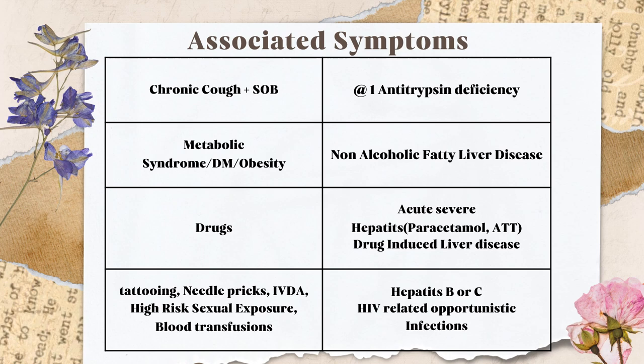There are specific questions about environmental, occupational, and sexual exposure that you must ask, because hepatitis B, C, and HIV are relatively very common in our setting. Ask specifically about tattooing history, needle prick marks, IV drug abuse, high-risk sexual exposure, multiple blood transfusions — in women, transfusion history is especially important to obtain.